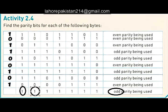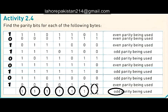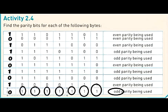In the last part we need odd parity. Counting the number of ones: one, two, three, four, five, six, seven — which is odd. So we write a zero. That was Activity 2.4; I will solve Activity 2.5 next time. Thank you.